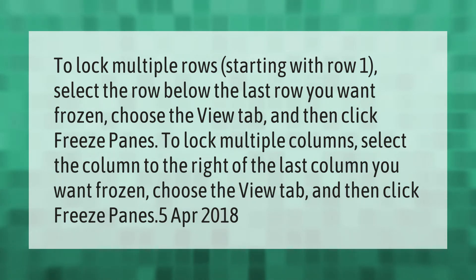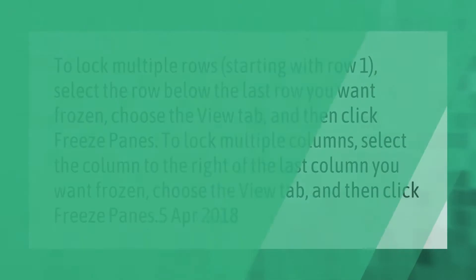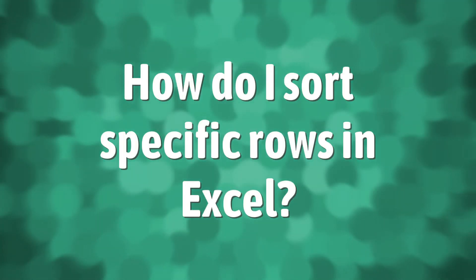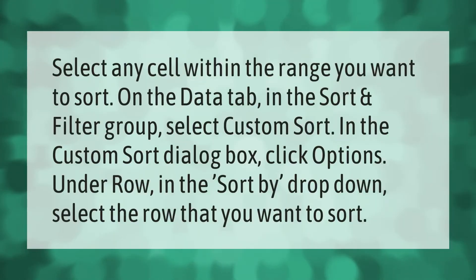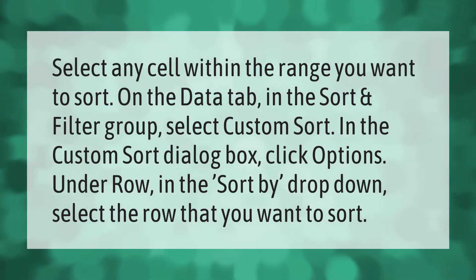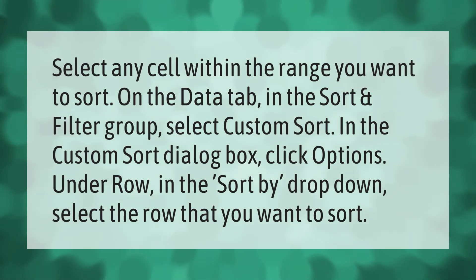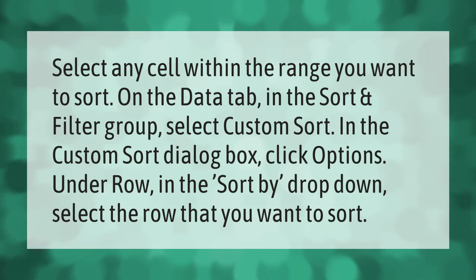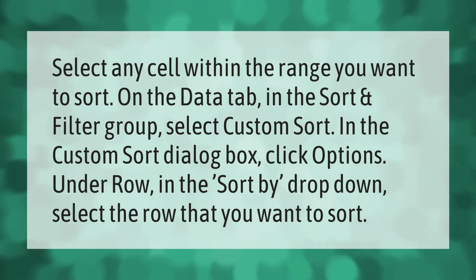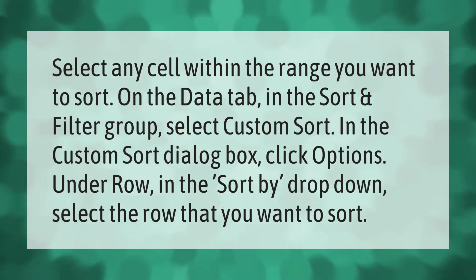To perform a custom sort, select any cell within the range you want to sort. On the Data tab, in the Sort and Filter group, select Custom Sort. In the Custom Sort dialog box, click Options. Under Row, in the Sort By drop-down, select the row that you want to sort.